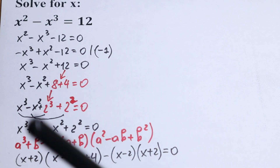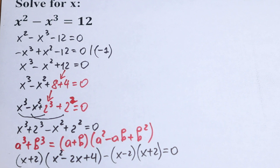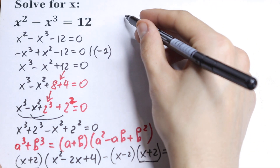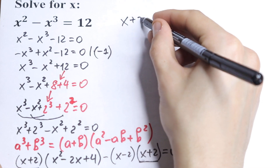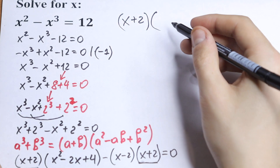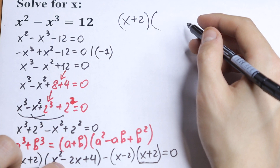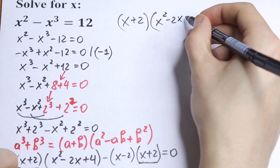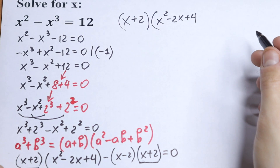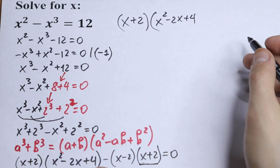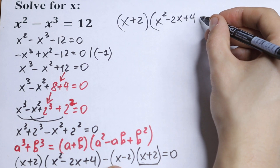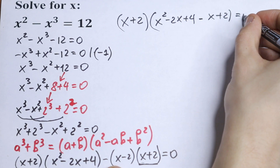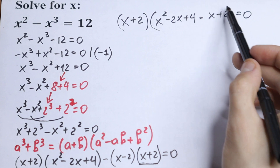A really nice situation right now because we have x plus 2 and x plus 2 here — we can factor it out as a common factor. So we will have x plus 2, and in parentheses we will have x squared minus 2x plus 4, and then minus x plus 2.